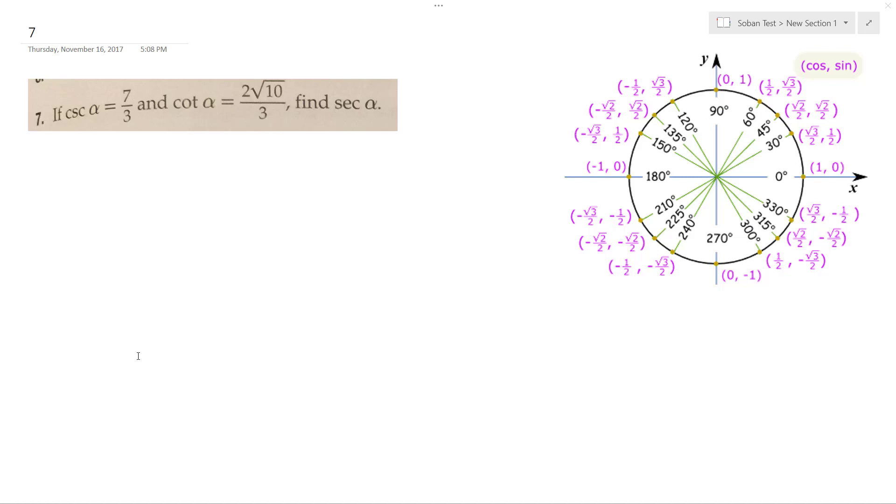So we've got the cosecant of alpha equals 7 over 3, and the cotangent of alpha is equal to 2 square root of 10 over 3. We want to find the secant of alpha.